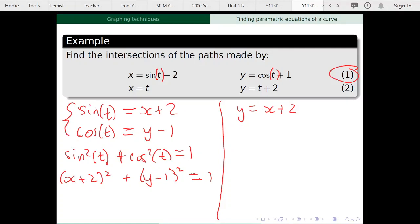So now that we have our two equations, we just find the intersections as we would normally find the intersections of graphs. So I've got y by itself, so why not substitute in y equals x plus 2 into that equation for the circle. So it'd be x plus 2